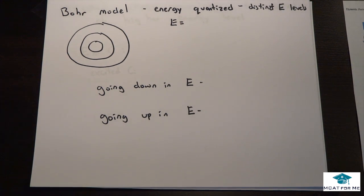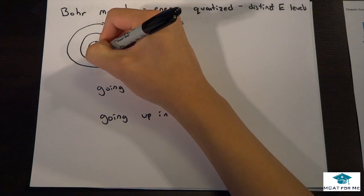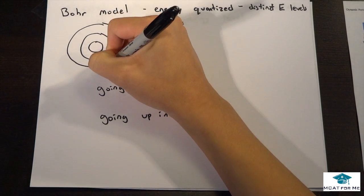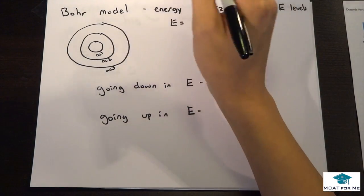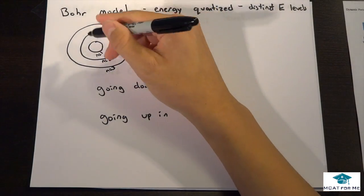The next thing we're going to be talking about is the Bohr model of the atom. What is the Bohr model? It's a model that we use to show different energy levels and to show that energy is quantized. Quantized means that there are distinct energy levels: n=1, n=2, n=3.